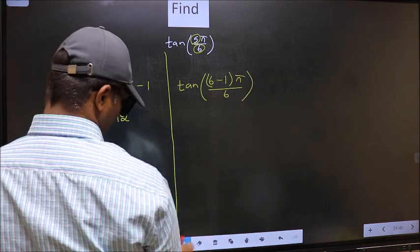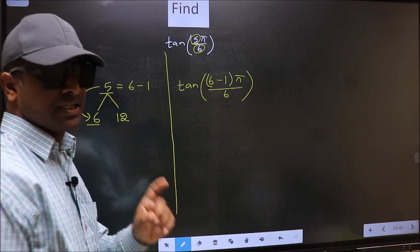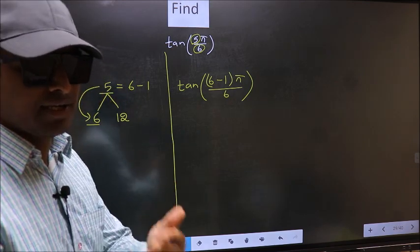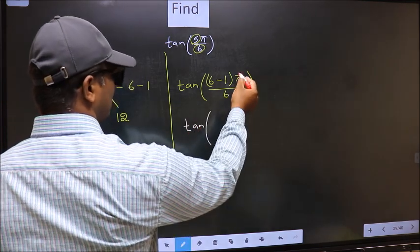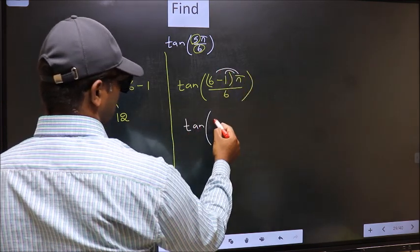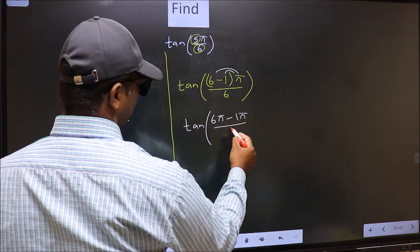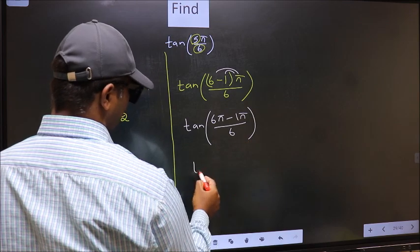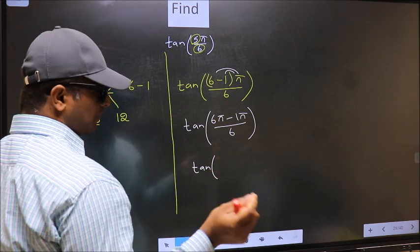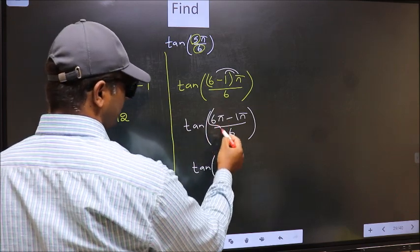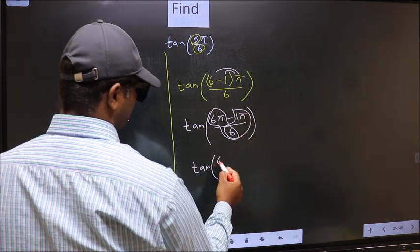Next, tan - now you should open the brackets. You get (6π - 1π)/6. Now, tan over here, you should split the denominator in this way: that is 6π/6 minus 1π/6.